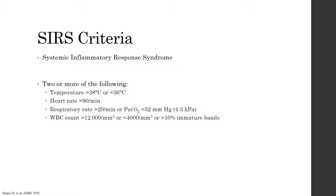Under the SIRS criteria, patients need to have two or more of the following: a temperature greater than 38 degrees Celsius or less than 36 degrees Celsius; a heart rate greater than 90 beats per minute; a respiratory rate greater than 20 breaths per minute or a PaCO2 less than 32; and a white blood cell count greater than 12,000 or less than 4,000, or greater than 10% immature bands.